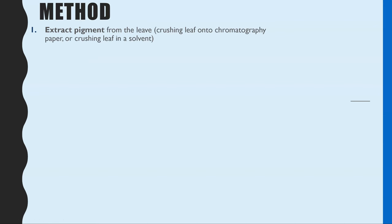The method: number one, you have to be able to extract the pigment from the leaf that you are sampling. This could either be by taking the leaf itself and a glass rod and just crushing the leaf onto the chromatography paper, or if you are going to be following the TLC method, you might have to crush the leaf in a particular solvent so you then have the pigment suspended in that solvent as a liquid.